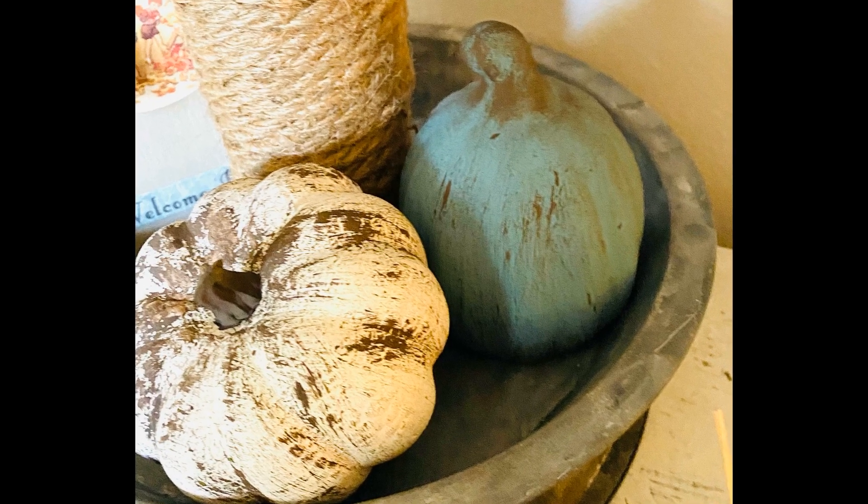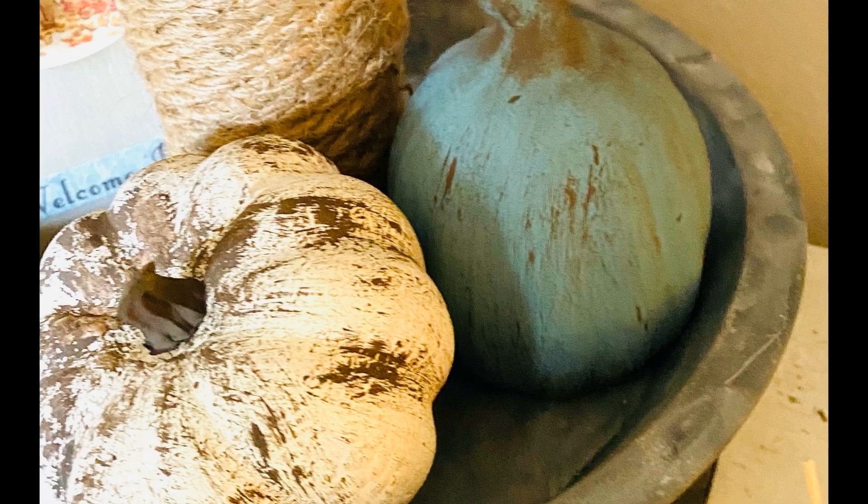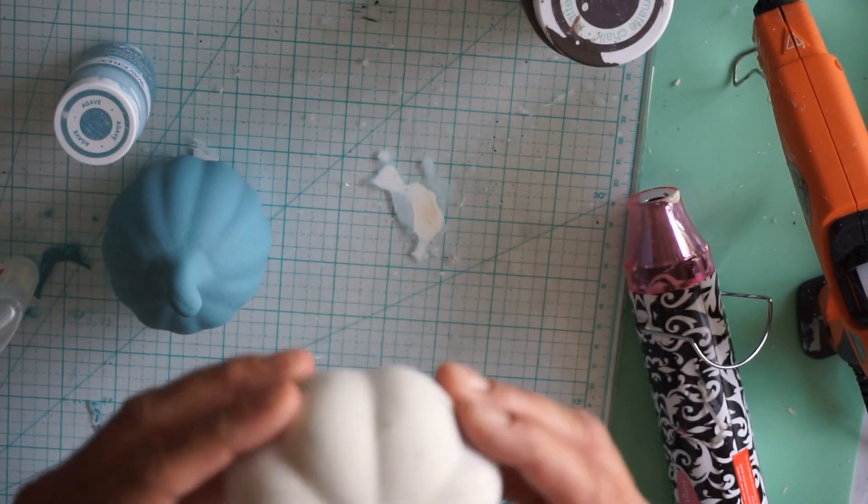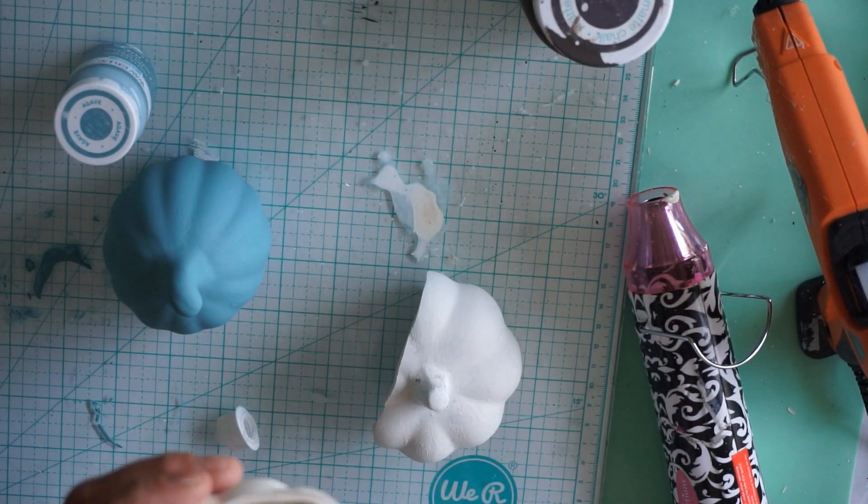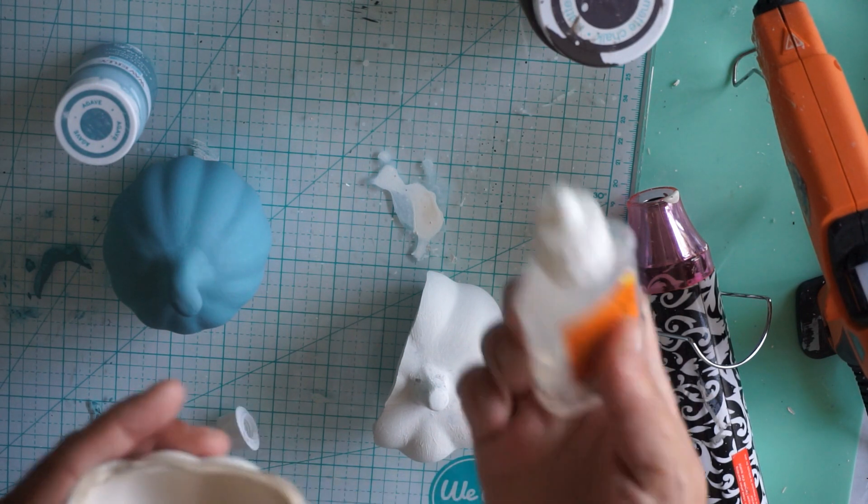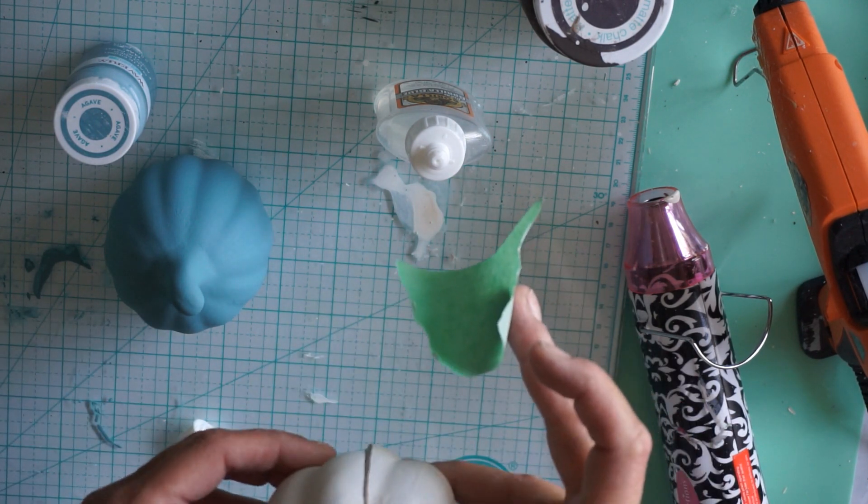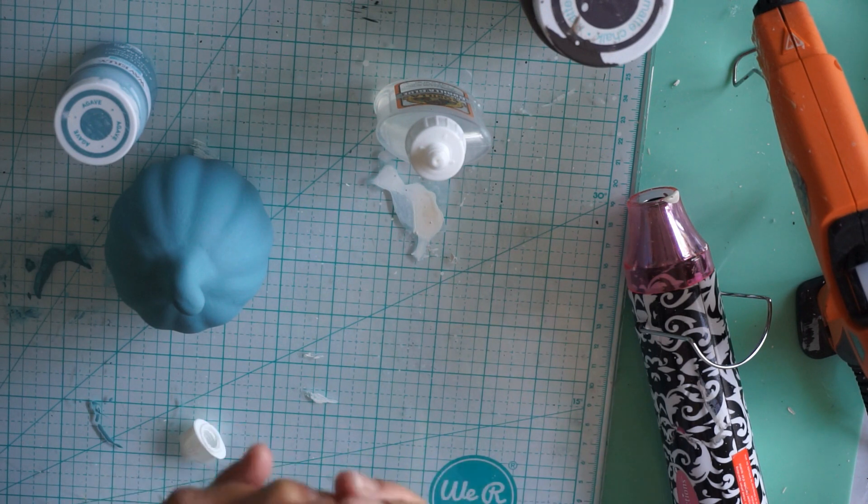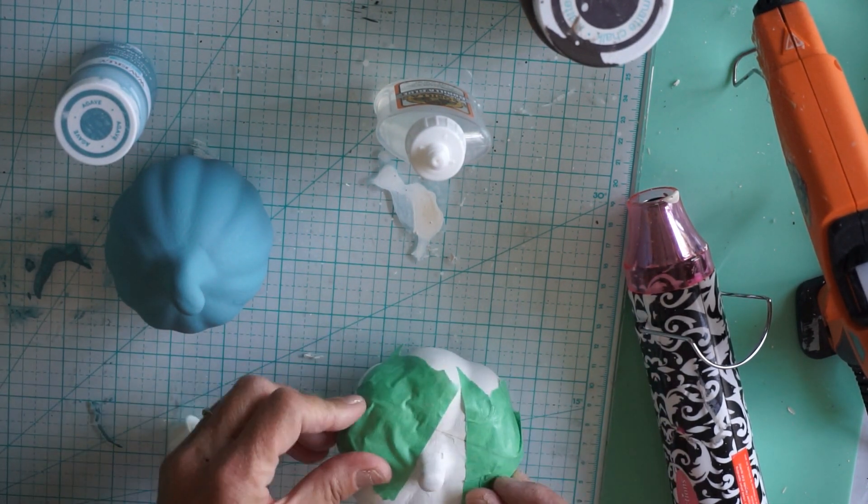The first DIY are just some simple little pumpkins that I painted. I used agave for that first pumpkin on the left. These are ceramic pumpkins that I got for a dollar at Family Dollar. However, I dropped that one and that's plaster, the color plaster.